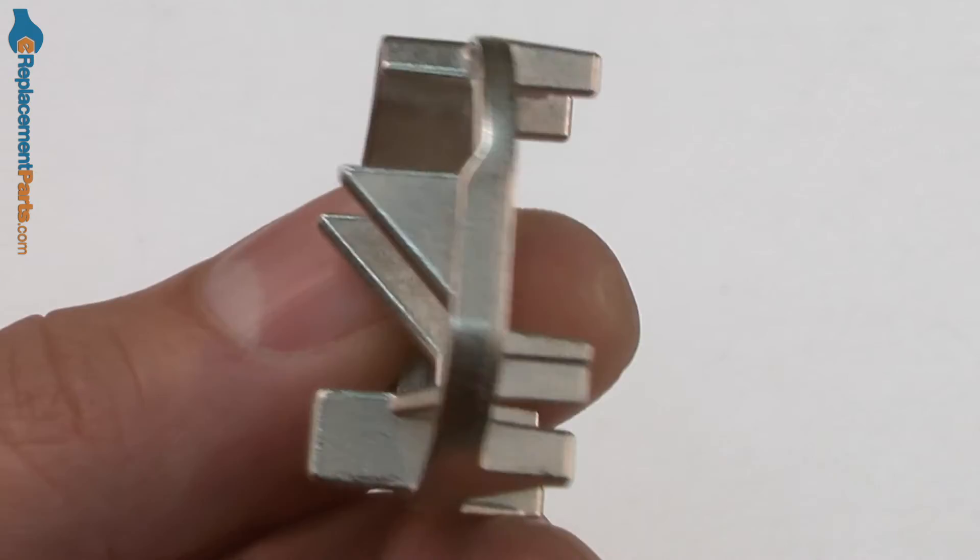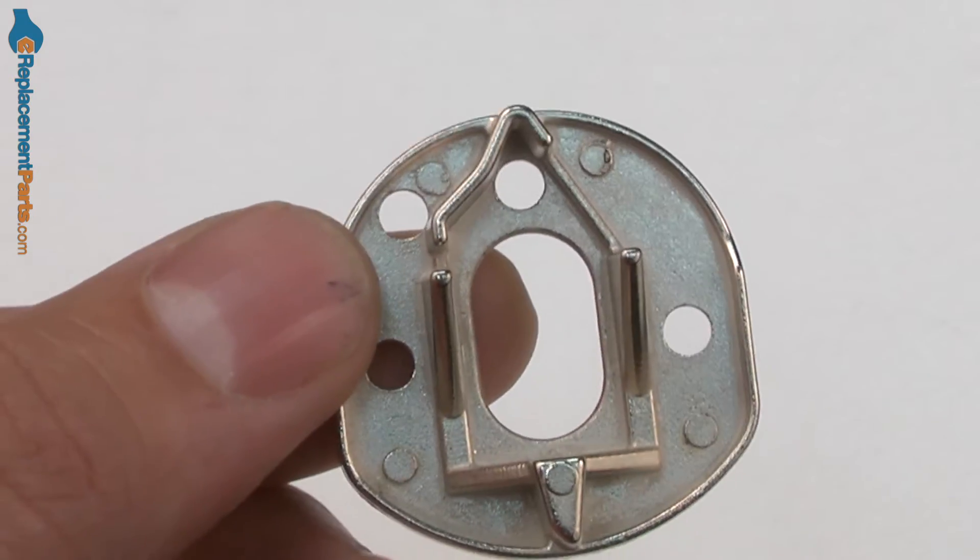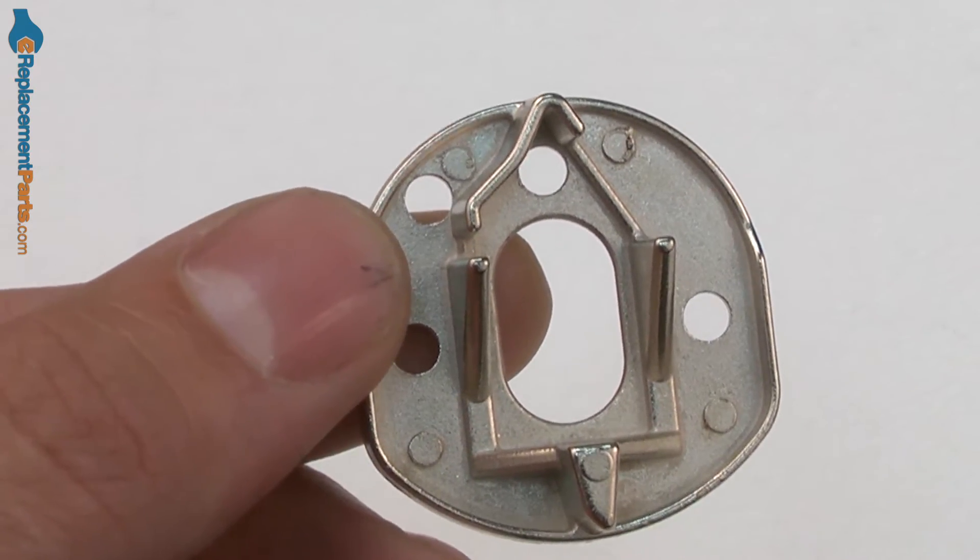The slider is one of the parts inside the trimmer head that controls the amount of line that's fed out of the head when it's bumped against the ground. After years of use, it's possible that the slider can become damaged or worn and will need to be replaced. Replacing it is easy to do and I'm going to show you how.